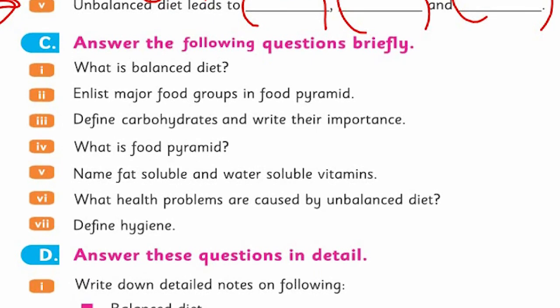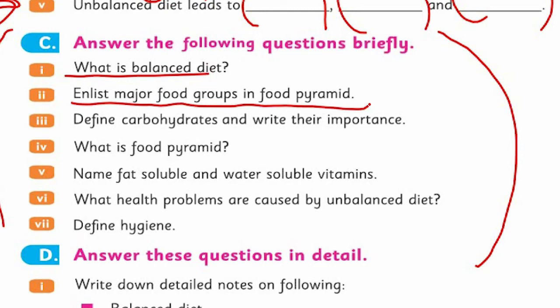Answer the following questions briefly. Here, your class work starts, my dear children. First, short questions - could be one line, half line, or two lines, but shouldn't be too much. What is balanced diet? Not too much, not too little - proper food groups as required by the body. Enlist major food groups. Define carbohydrate and write their importance.